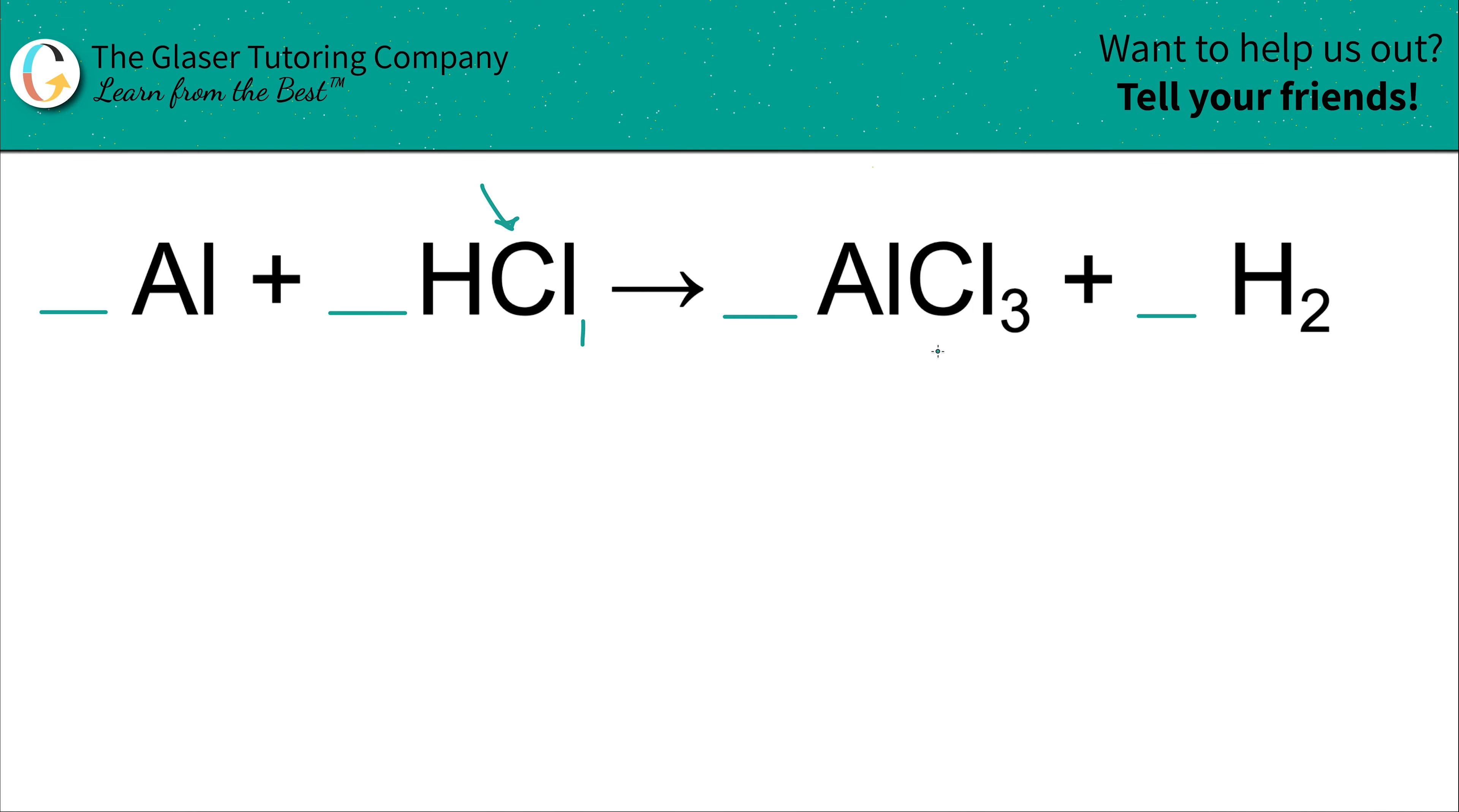So I have one chlorine on the left, three chlorines on the right. So I need to place in a coefficient of three there. So now I have three hydrochloric acid molecules. In each one of them, there's one chlorine. So therefore I have three chlorines.